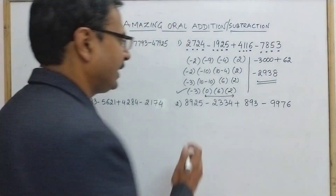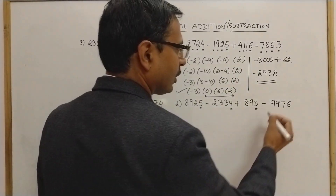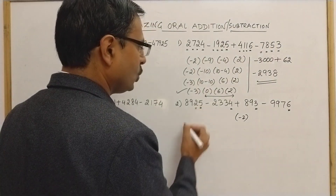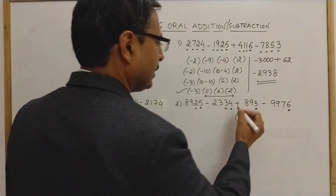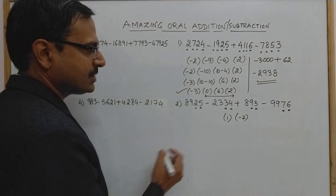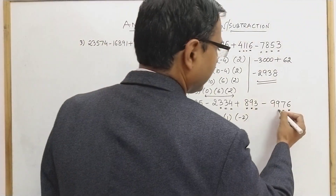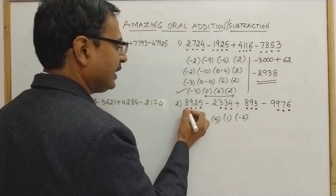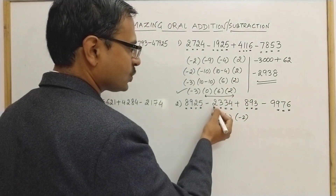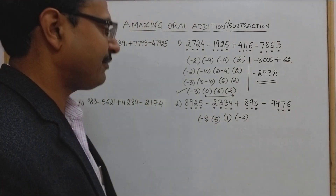For the second question: 5 minus 4 is 1, plus 3 is 4, 4 minus 6 is minus 2 — that's the first digit. Second digit: 2 minus 3 is minus 1, plus 9 is 8, 8 minus 7 is 1. Third digit: 9 minus 3 is 6, plus 8 is 14, 14 minus 9 is 5. Fourth digit: 8 minus 2 is 6, 6 minus 9 is minus 3. So the four numbers are: minus 3, 5, 1, and minus 2.